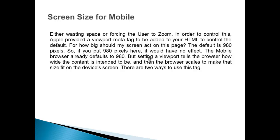In order to control this, Apple provided a viewport meta tag to be added to your HTML to control the default for how big the screen should act on a given page. The default is 980 pixels, so if you put 980 pixels there it would have no effect — the mobile browser already defaults to 980. But setting a viewport tells the browser how wide the content is intended to be, and then the browser scales to make that size fit on the device's screen. There are two ways to use this tag.